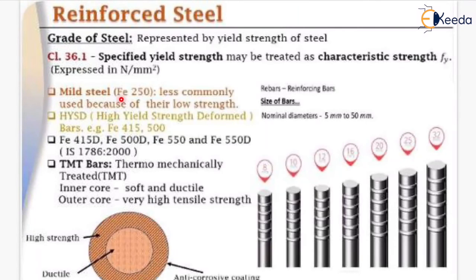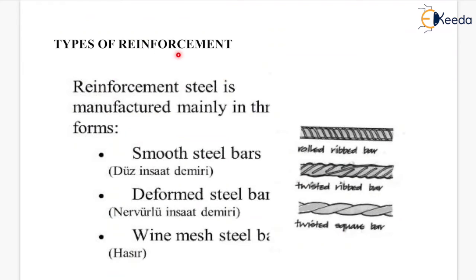Mild steel, i.e. FE250, is less commonly used because of lower strength. High yield strength deformed bars — examples being FE415 and FE500 — are generally used in RCC structures. TMT bars have an inner core that is soft and ductile and an outer core of very high tensile strength. Reinforcement steel is manufactured mainly in the forms of smooth steel bars, deformed steel bars, and wire mesh steel bars.